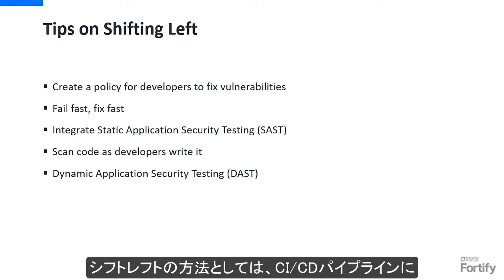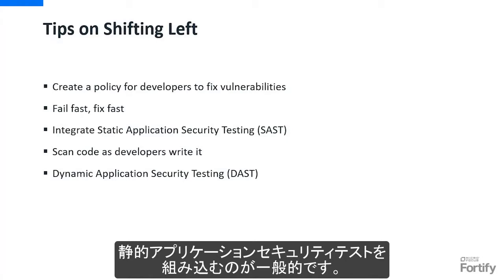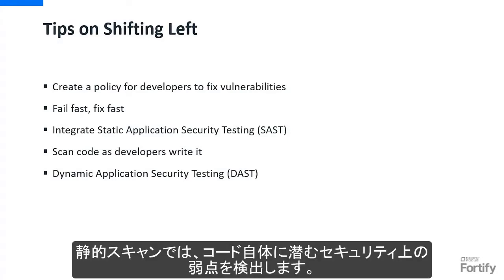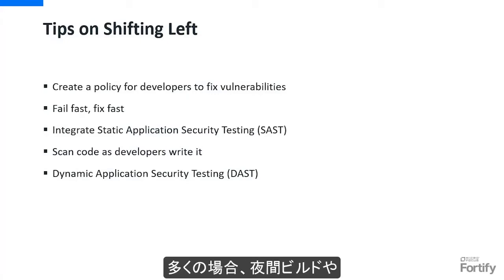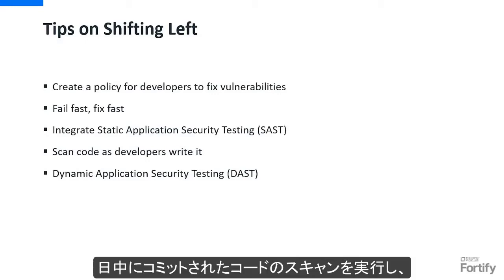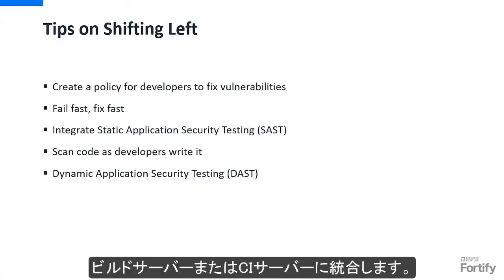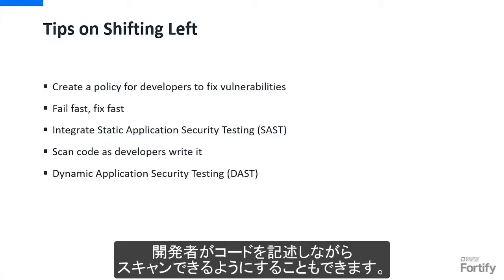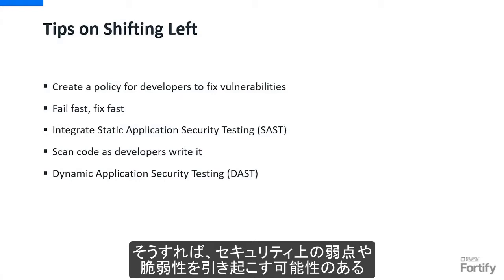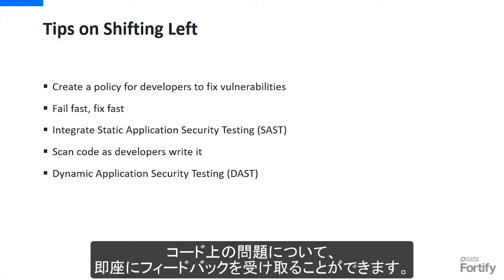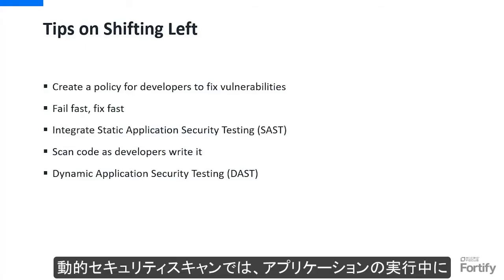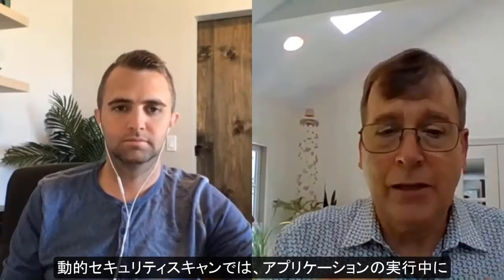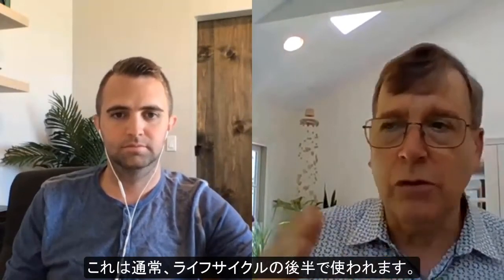A common way of shifting left is embedding static application security testing within the CI/CD pipeline. Static scans focus on finding security weaknesses in the code itself. Many conduct static scans on nightly builds for code committed during the day, and integrate SAST — static application security testing — with the build or CI server. You can also enable developers to scan code as they write it, receiving instant feedback on issues that might cause security weaknesses or vulnerabilities. Dynamic security scans look for vulnerabilities in real time while the application is running and executing, and are usually used later in the lifecycle.